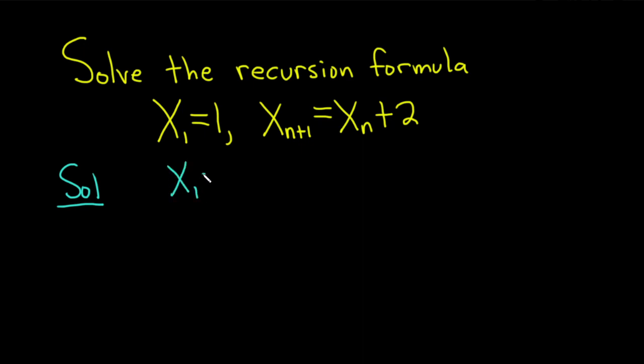So X sub 1 is going to be equal to 1 so we'll just write that down. Let's look at X sub 2. To figure out X sub 2 we're going to use this over here. If we're going to force n plus 1 to be equal to 2, that means that n is equal to 1. So this is equal to X sub 1 plus 2, which is equal to 1 plus 2, which is equal to 3.